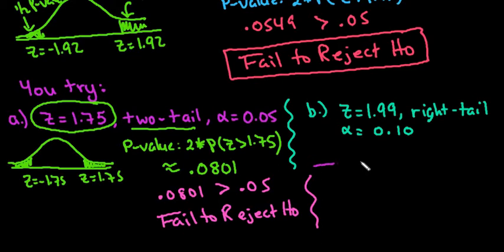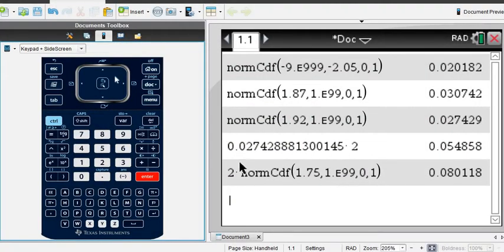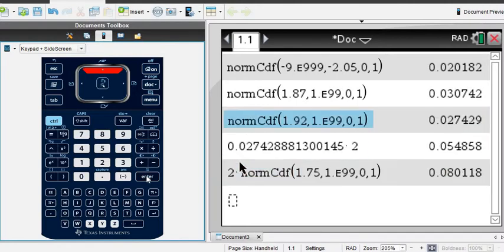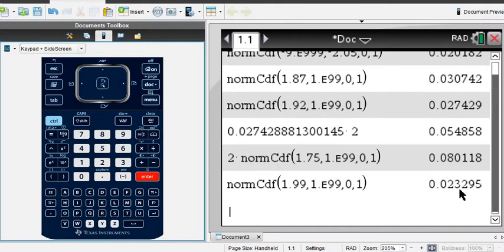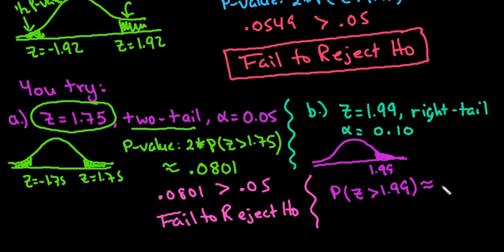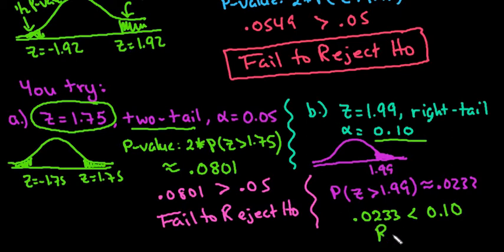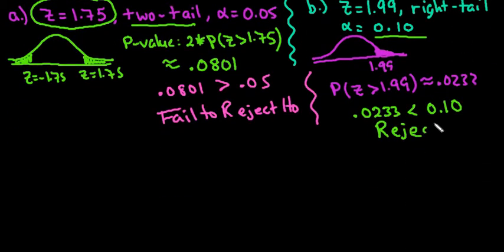The last one we have is z equals 1.99, and it's a right tail, so we go to the right. For this one, we're looking for the probability that z is greater than 1.99. We don't multiply by 2, so make sure you grab one that's not multiplied by 2. I'll change the 1.92 to 1.99 and hit enter. We get 0.0233. Comparing our p-value to alpha, 0.0233 is less than 0.10, so we reject the null hypothesis.